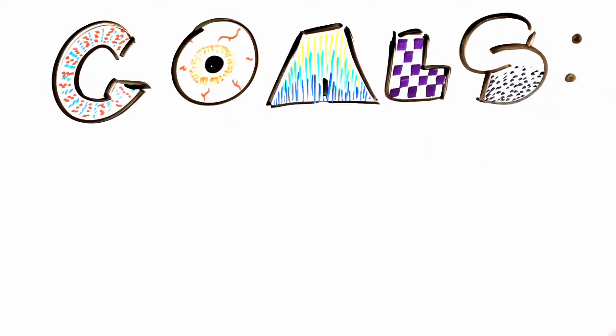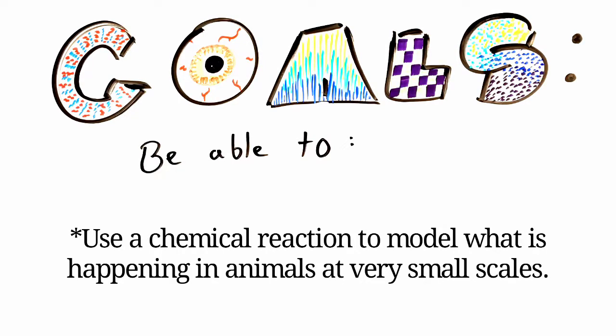By the time that you finish watching this video, you should be able to use a chemical reaction to model what is happening in animals at very small scales. That means we're talking about nanoscopic and microscopic scales.